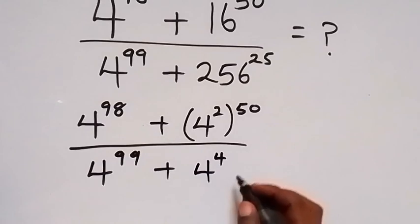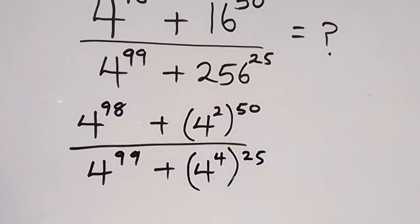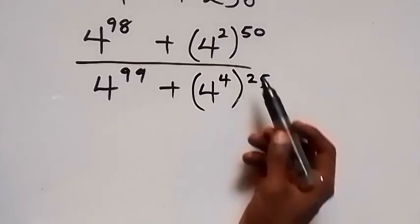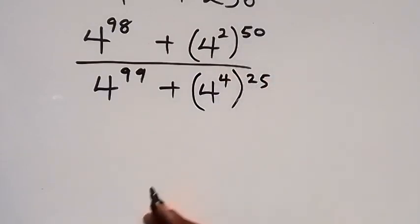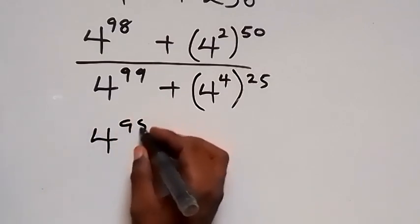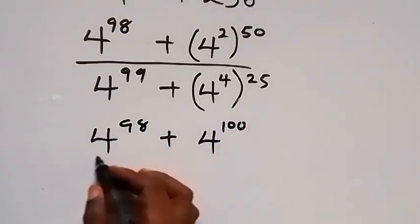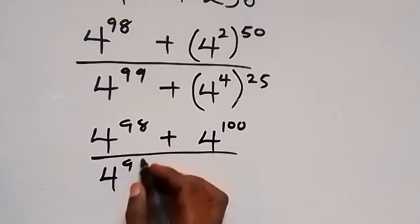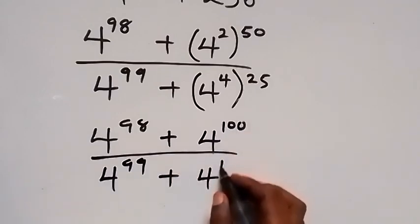4 multiplied by itself four times gives us 256, then raised to power 25. In the next step, we apply the law of indices — the powers multiply each other. This gives us 4 raised to power 98 plus 4 raised to power 100 in the numerator, divided by 4 raised to power 99 plus 4 raised to power 100 in the denominator.